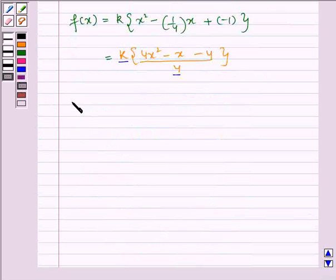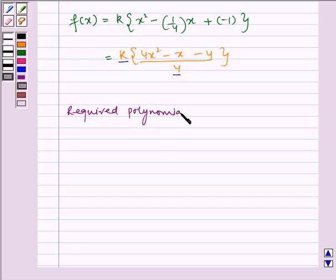Therefore, we get our required polynomial as f(x) = 4x² - x - 4.